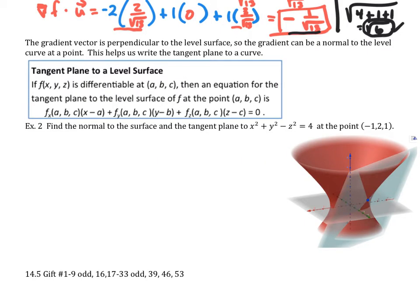Moving on if we want to write the tangent find a tangent plane to a level surface now what we can do is look at the gradient vector because it's perpendicular to the level surface so the gradient can be a normal for us to the level curve at a point. This helps us write the tangent plane to a curve and here is the tangent plane this is how we can set it up.